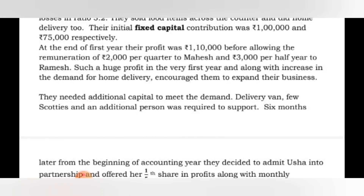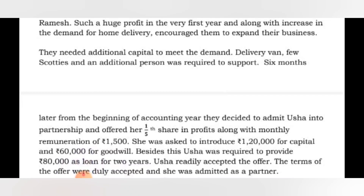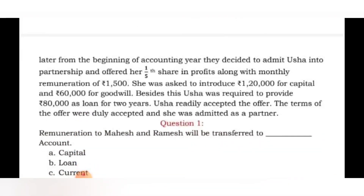Such a huge profit in the very first year, along with an increase in demand for home delivery, encouraged them to expand their business. They needed additional capital — a delivery van, a few scooties, and additional persons were required. Six months later from the beginning of the accounting year, they decided to admit Usha into the partnership, offering her one-fifth share in profit along with a monthly remuneration of 1,500.